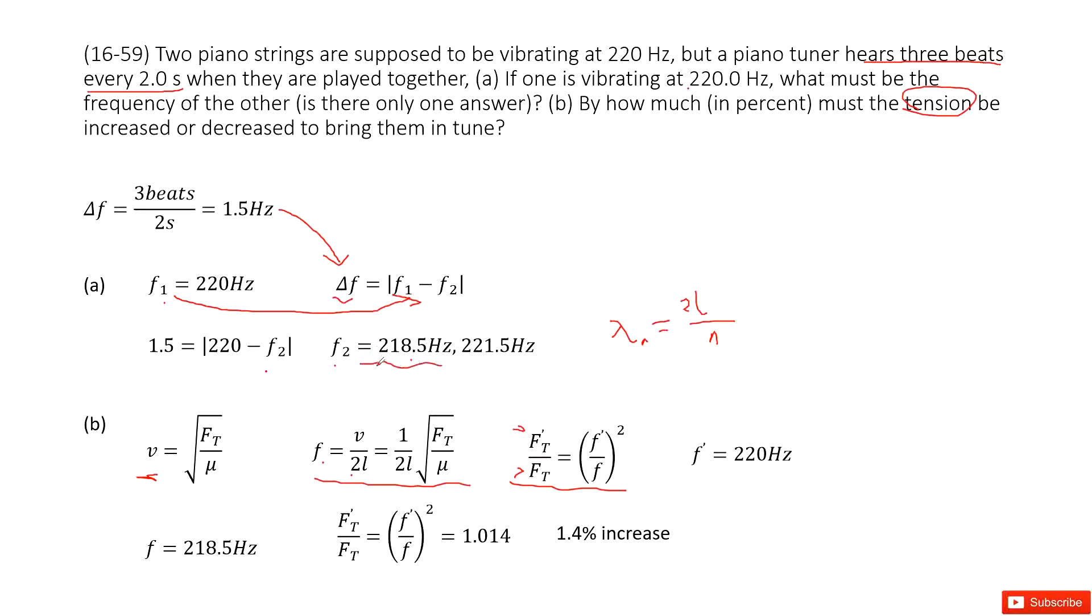In first case, we can see f2 is just 218.5 hertz. So we input this f inside. And after adjusting the frequency is 220 and FT, we can get the ratio. The tension ratio is 1.014, so that means 1.4% increase the tension.